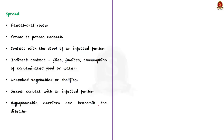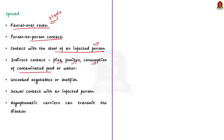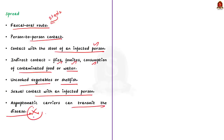Shigella is found in the intestinal tract of infected people and can be transmitted through the fecal oral route by person-to-person contact, or through contact with feces from an infected person. It can also be transmitted through indirect contact such as by flies, fomites, or consumption of contaminated food or water. Shigella is found typically in uncooked vegetables or uncooked shellfish. It is also transmitted through sexual contact with an infected person, so asymptomatic carriers can also transmit this disease. Common pets, farm animals and wild animals cannot spread these germs.